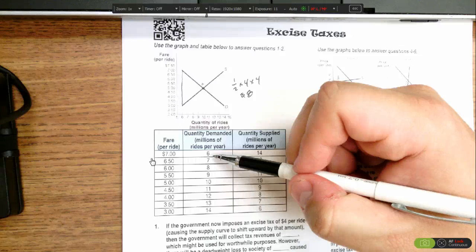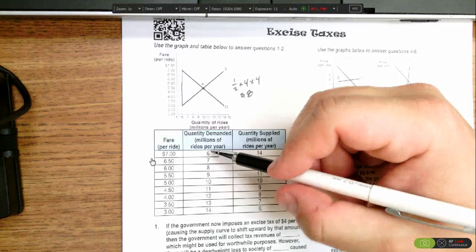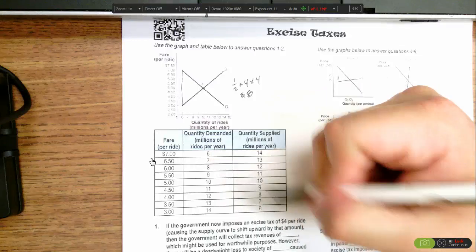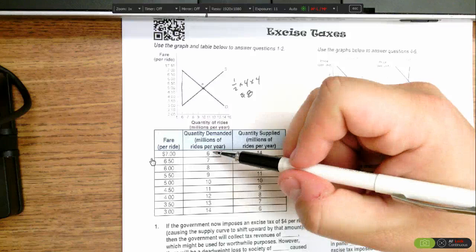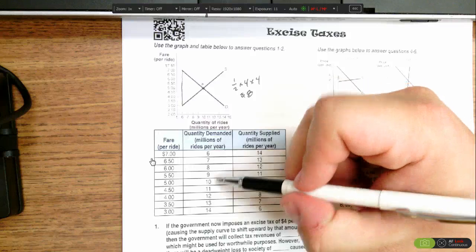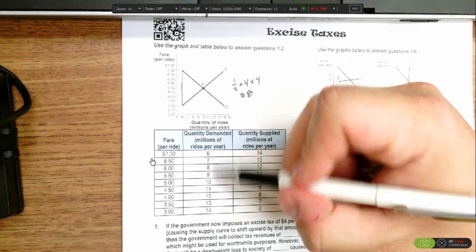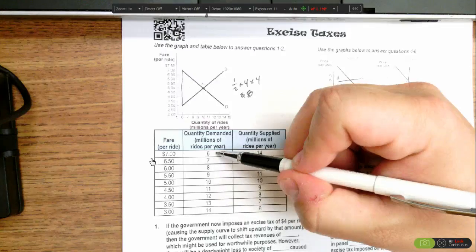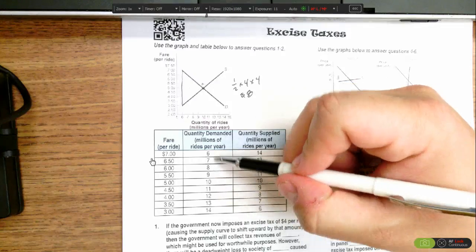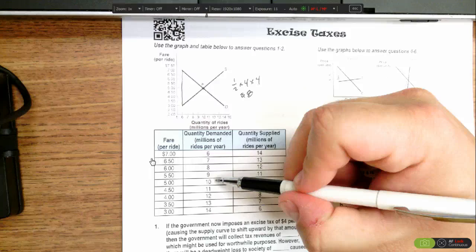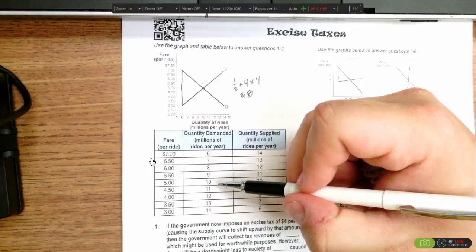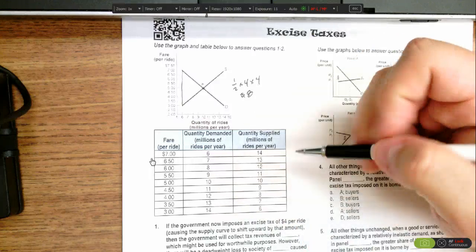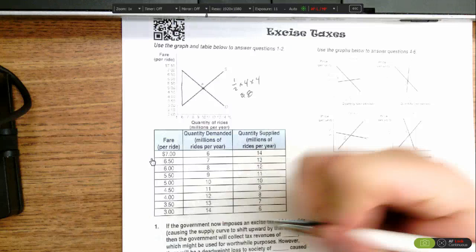And then if we're looking for the deadweight loss, again, it would be one-half times the tax wedge, which is the tax rate. So it would be one-half times the $4 tax times the difference between the quantity demanded in equilibrium. The difference here is 10 million in equilibrium, 6 million with the tax. So it would be one-half times the 4 million rides lost times the $4 per ride, which gets us the same $8 million in deadweight loss.